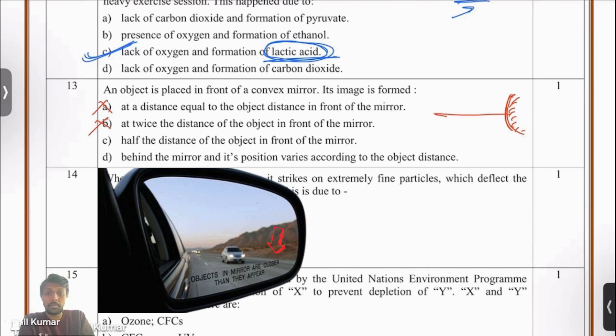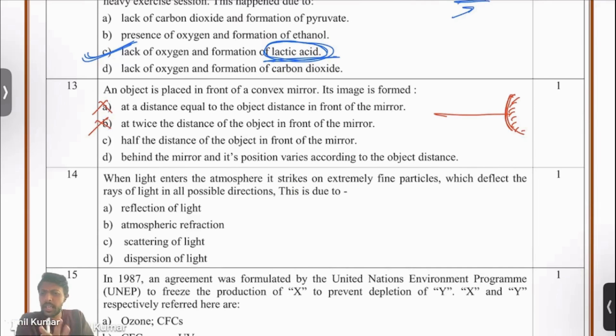Half the distance of the object in front of the mirror? Well, for some cases that's a possibility but you can't say that always. It's not always at half the distance. The fourth option is the only one left. It says it's behind the mirror and its position varies according to the object's distance. Of course, it's behind the mirror. The image that is formed is going to be formed behind the mirror. That's how we will be able to see it. This is the correct answer.